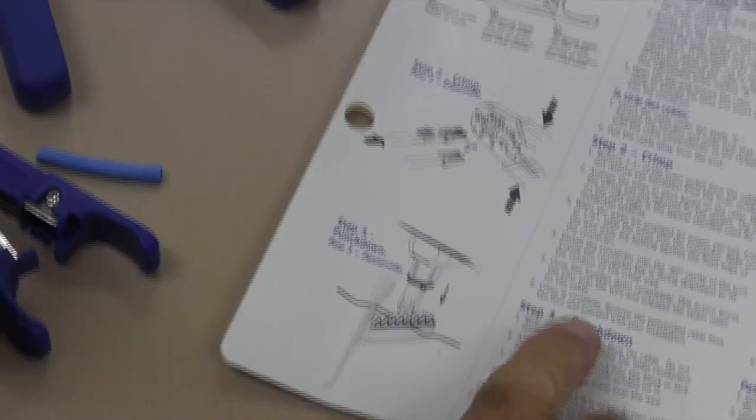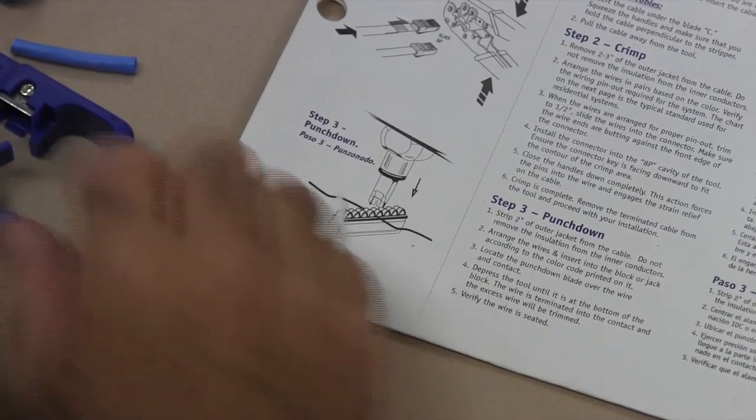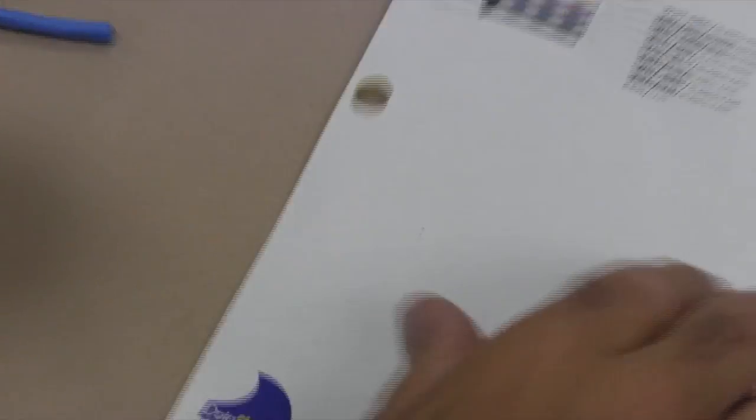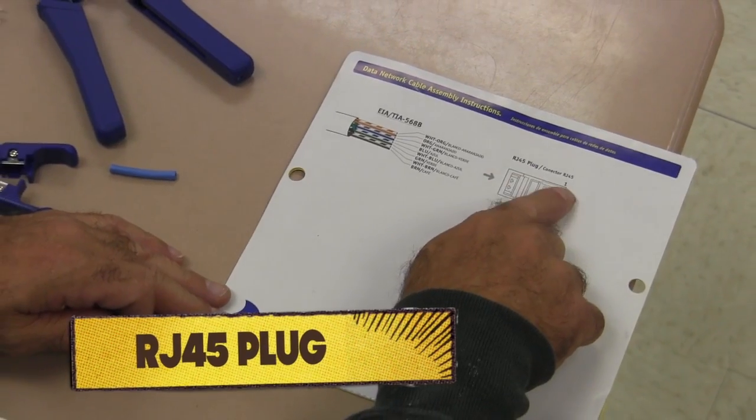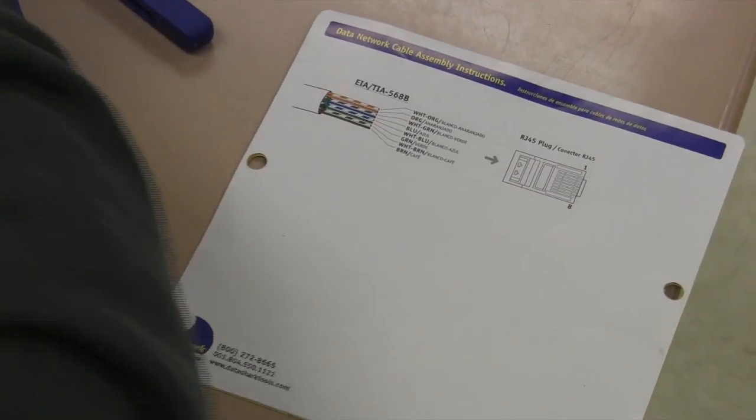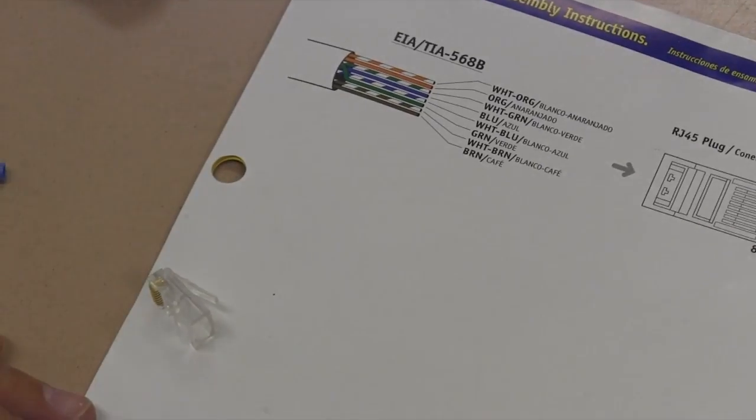As I take this, we're not using the punch-down. This is for a block that will be installed. There is a specific color coding that we must use. The color coding is 1 through 8. It's the RJ45 plug connector. This is currently the connector that we will be using. It goes 1 through 8.